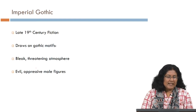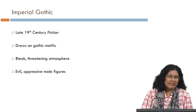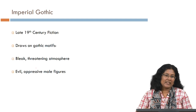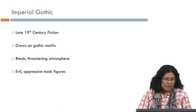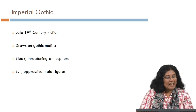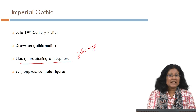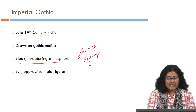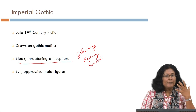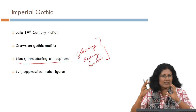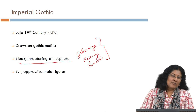The Imperial Gothic is a mode that was in fashion in late 19th century fiction, and it draws on Gothic motifs — it sources some characteristics for its figures and settings from Gothic fiction. The Imperial Gothic has a bleak and threatening atmosphere, something gloomy, scary, frightening, and hostile. These characteristics are also found in the Gothic narrative, so Imperial Gothic and classic Gothic overlap in their usage of similar pointers to talk about settings and figures.